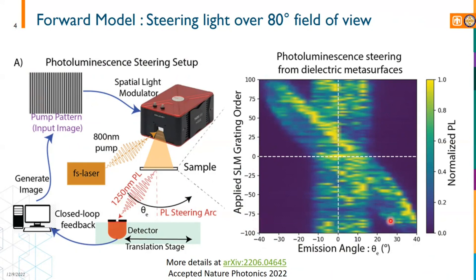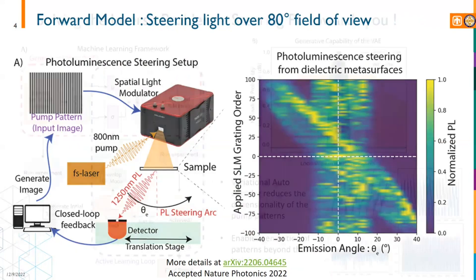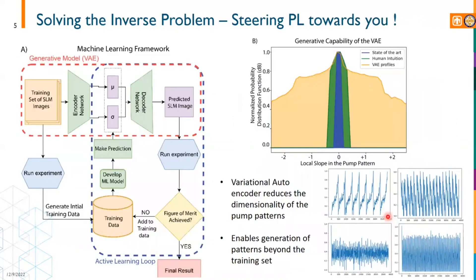This is essentially our forward model. Typically we want to solve the inverse problem, where we want to shine the PL towards any given angle. We make that happen with a combination of a generative model and an active learning loop.